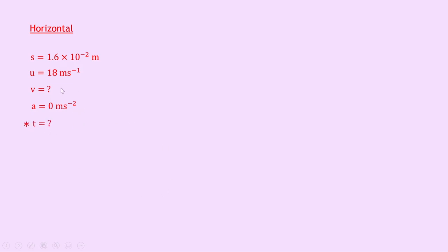Choosing an equation of motion here that does not have v in it, we can use s equals ut plus a half at squared. Substituting in the numbers we get 1.6 times 10 to the minus 2 equals 18t plus a half times 0 times t squared.